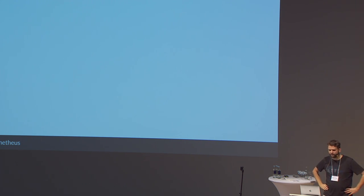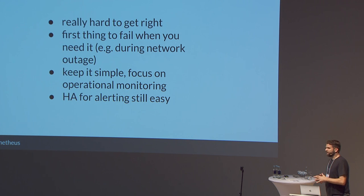Why didn't we do clustering — why only simple local storage? Clustering is really hard to get right, and it's the first thing that might break in a network outage. You want your monitoring system to always be up with the most recent data — that's the most important thing, that it can still use recent data to alert. If you just run two Prometheus servers in replicated HA mode, where they don't talk to each other but pull in the same data, you have that guaranteed — making for a more stable and simpler system overall.